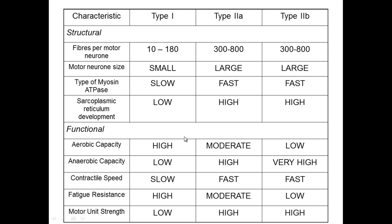Welcome to the fourth video in this series about muscles. Today we're going to look at spatial summation and motor units. At the end of the last video, we looked at some of the properties of the different types of muscle fibers: type 1 or slow twitch, type 2a which is fast oxidative glycolytic, and type 2b which is fast glycolytic.